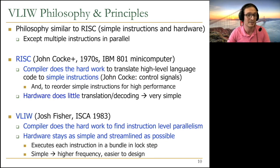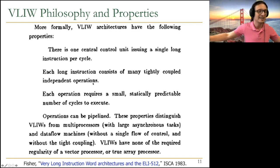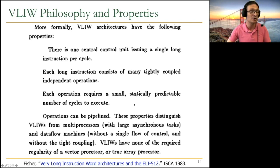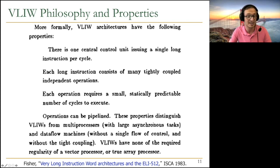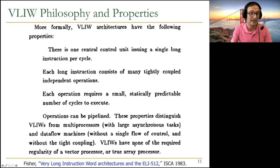From the original paper: there is one central control unit issuing a single long instruction per cycle; each long instruction consists of many tightly coupled, independent fine-grained operations; each operation requires a small, statically predictable number of cycles to execute so the compiler can schedule effectively. These properties distinguish VLIW from multiprocessors — which parallelize large tasks — and from data flow machines, which don't have single flow of control.